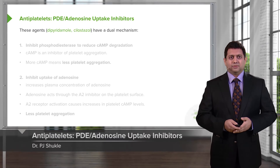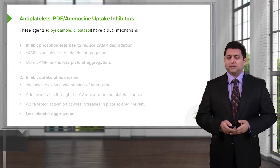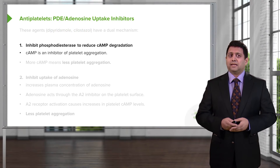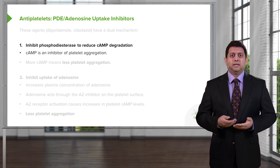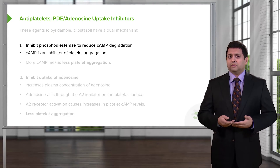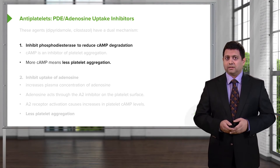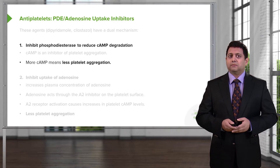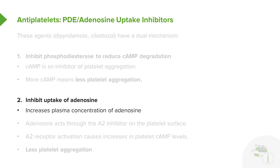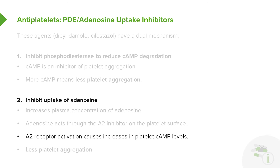Dipyridamole is a commonly used agent with a dual mechanism of action. First, it inhibits phosphodiesterase, which reduces cyclic AMP degradation. Since cyclic AMP is an inhibitor of platelet aggregation, more cyclic AMP means less platelet aggregation. Second, dipyridamole inhibits the uptake of adenosine, increasing plasma adenosine concentration. Adenosine acts through the A2 receptor on the platelet surface, and A2 receptor activation causes increases in cyclic AMP levels — again, more cyclic AMP means less platelet aggregation.